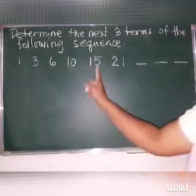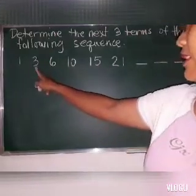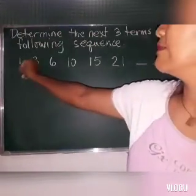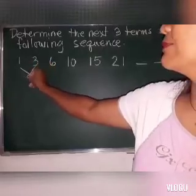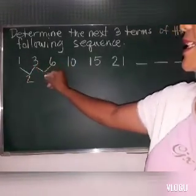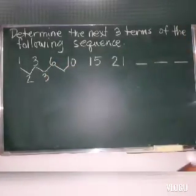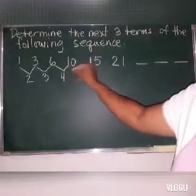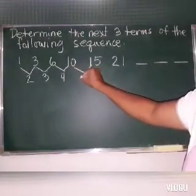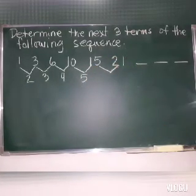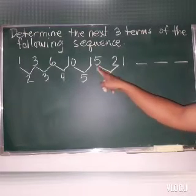First, let's find the difference of this number. The second term to the first term. So, 3 minus 1, we have 2. Next, 6 minus 3 is 3. 10 minus 6, we have 4. 15 minus 10, we have 5. Next is 15. 21 minus 15, we have 6.